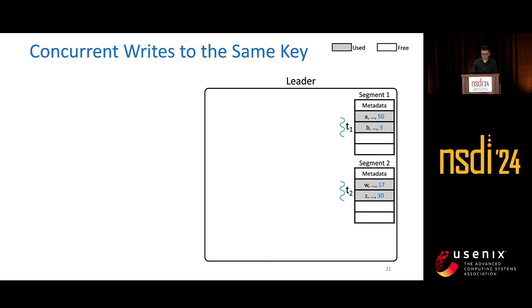If we have concurrent writes to the same key from different clients, we need to order both the operations at a global level.